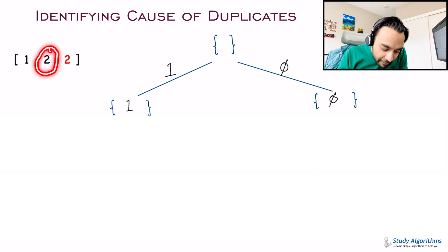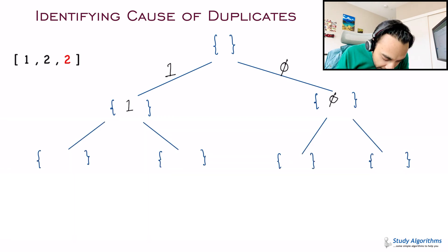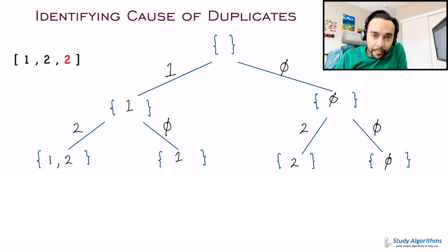We start off with the first element. Right? And then, either we choose to keep this element or we choose to not keep the element. Correct? This will give me two subsets. So, I get one of my subsets as one and the other subset would be empty. Right? So far, so good. In the next step, I am gonna decide whether I want to keep the next element or I do not want to keep the next element. So, this will again give me two cases each for each of the subset. Right?